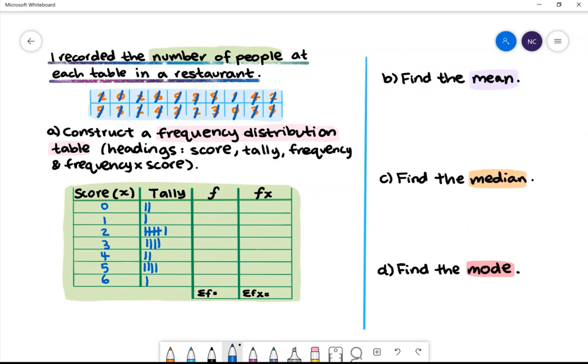Next we'll write the frequencies. There are 2 empty tables, 1 table with 1 person, 6 tables with 2 people, 4 tables with 3 people, 2 tables with 4 people, 4 tables with 5 people, and 1 table with 6 people.